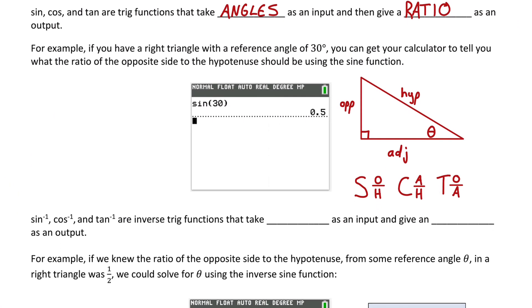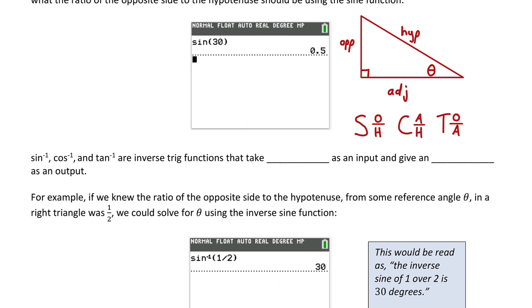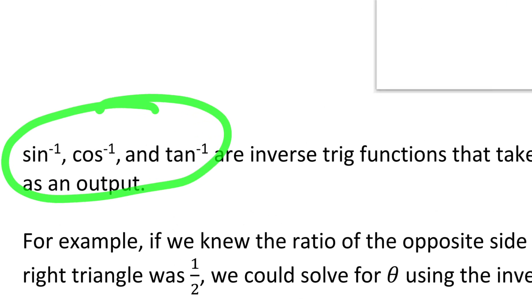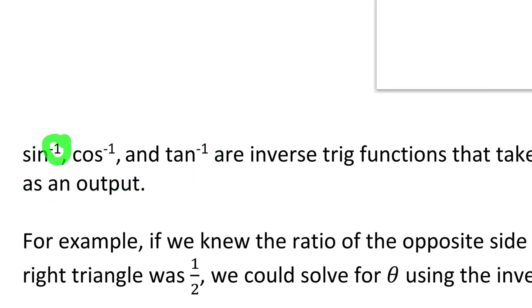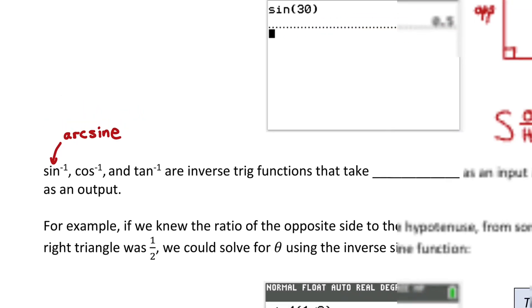What we want to focus on is: what if we know the ratio of sides and want the angle? That's what inverse trig functions are for. This notation with a little negative one that looks like an exponent is actually not treated like an exponent — it just means the inverse of sine. Sometimes that inverse sine function is called arc sine. It means it does the opposite operation of what the sine function does. It's not the reciprocal; it's the inverse.